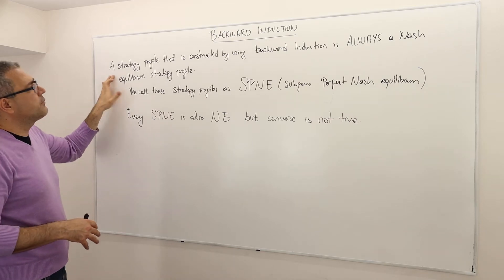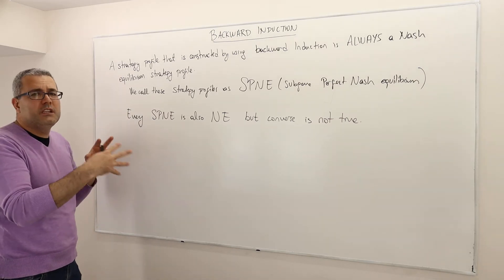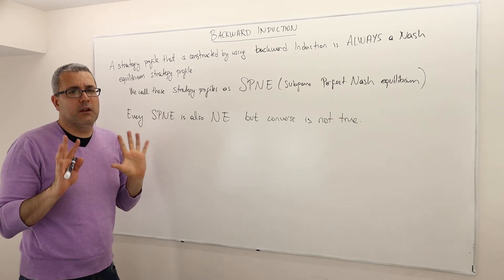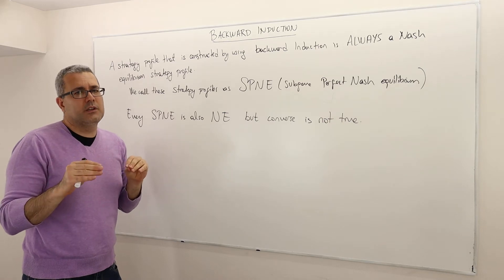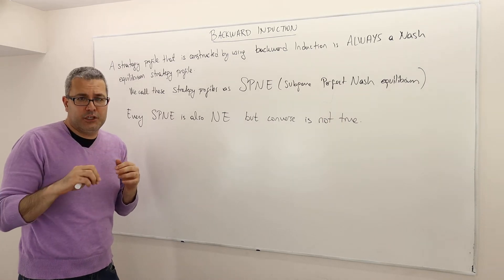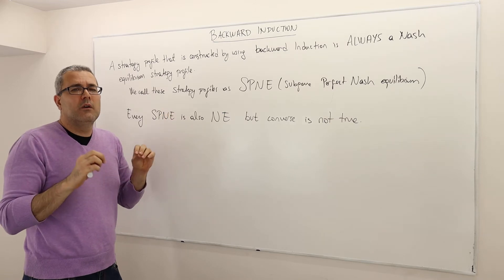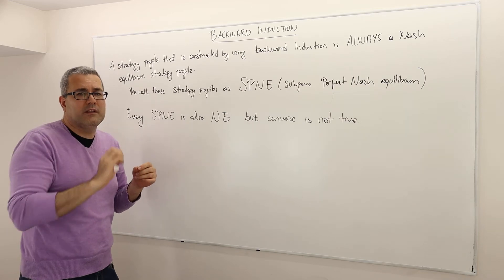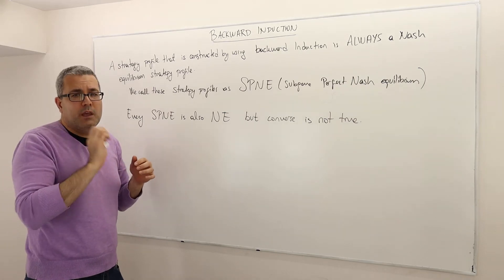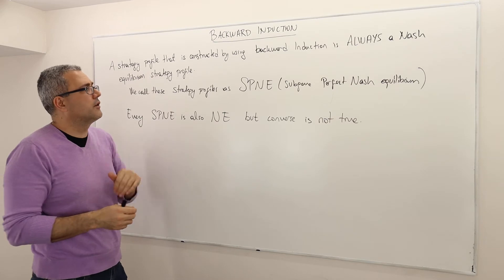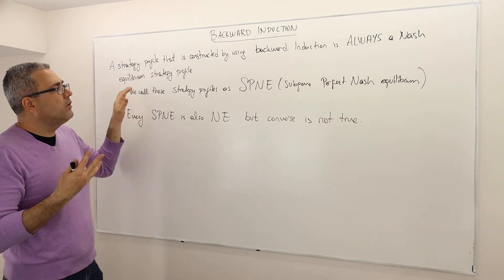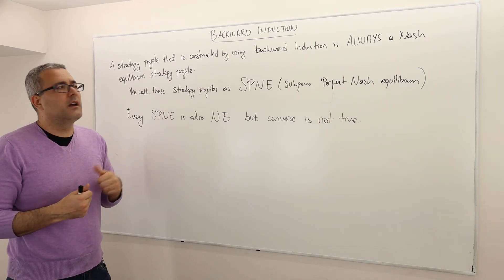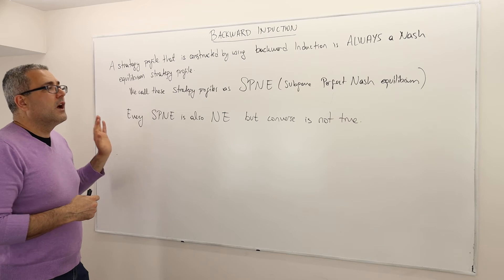A strategy profile that we construct using backward induction is always a Nash equilibrium strategy profile. By using backward induction we actually find Nash equilibrium — we don't find something else. If a game has a Nash equilibrium, we pinpoint it with backward induction, and we call these strategy profiles sub-game perfect Nash equilibrium, or SPNE.